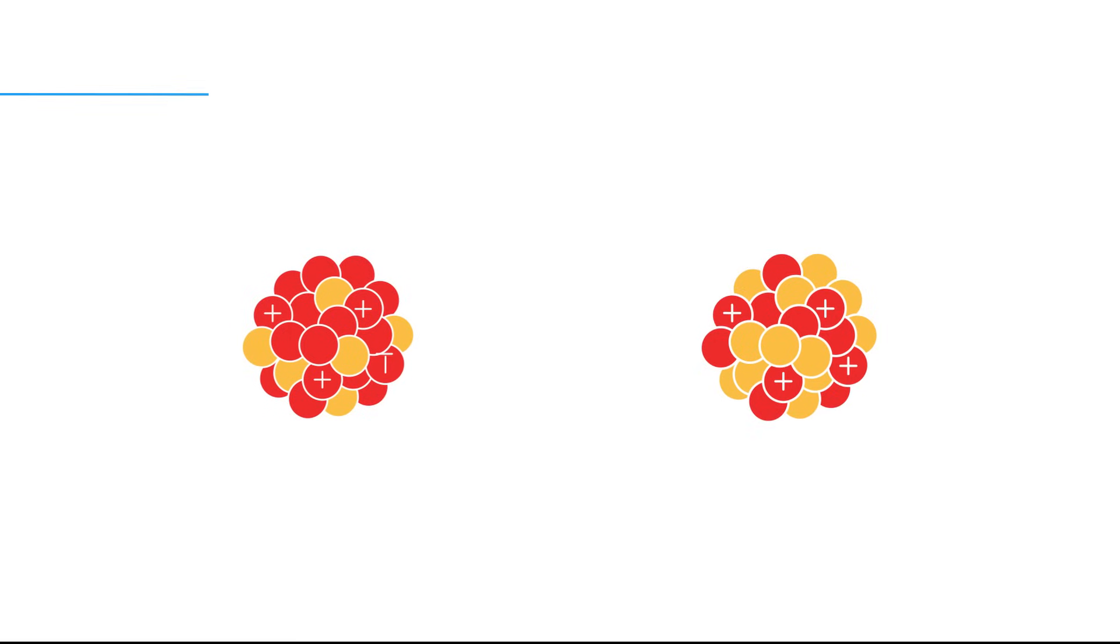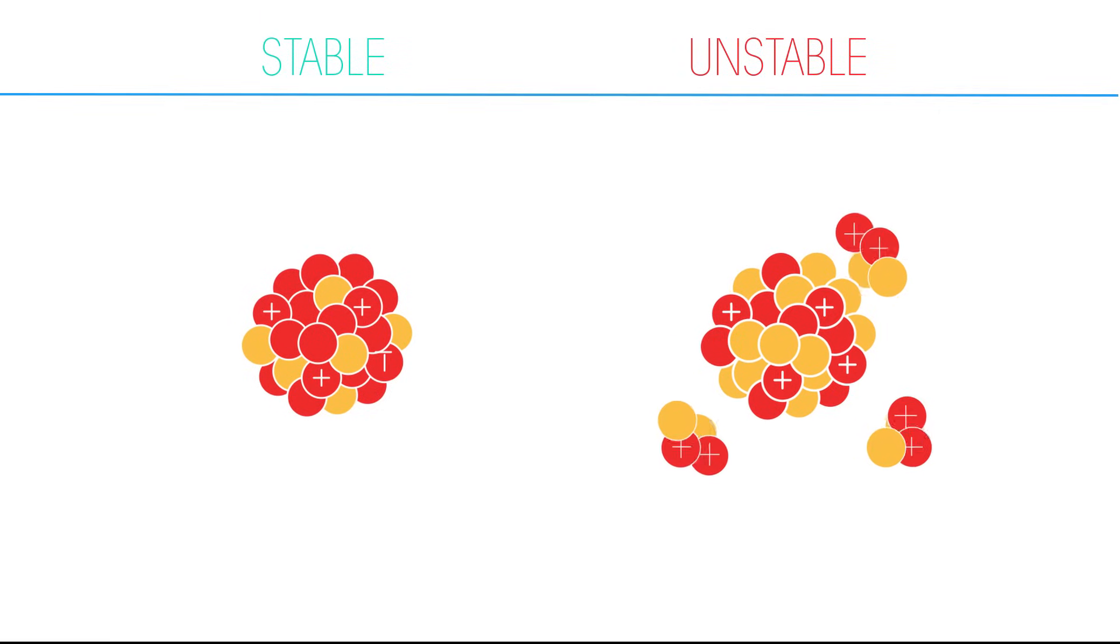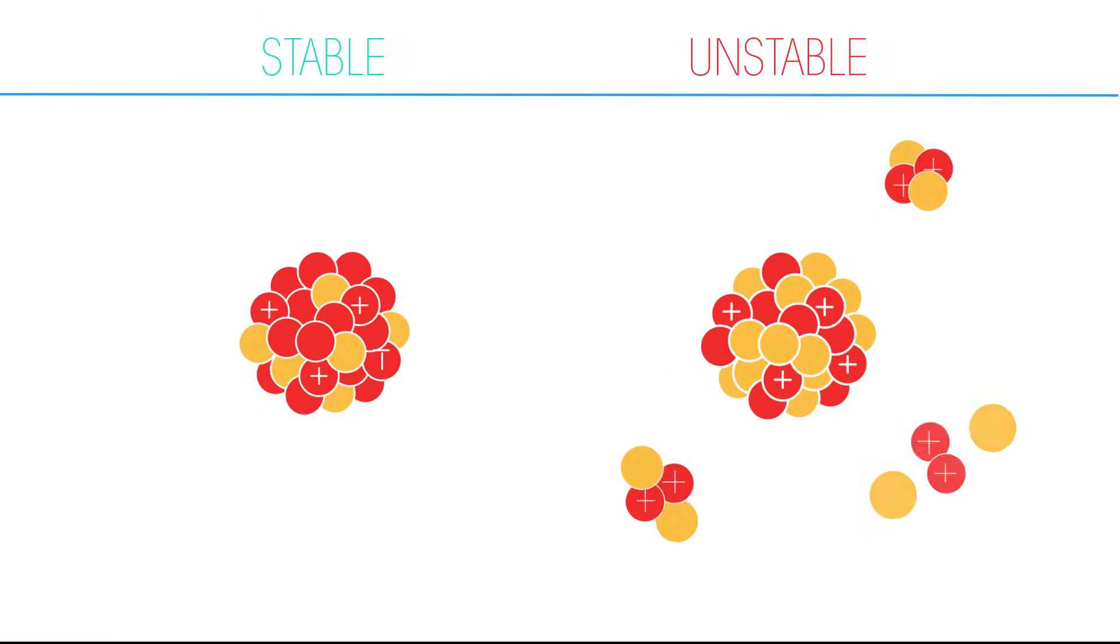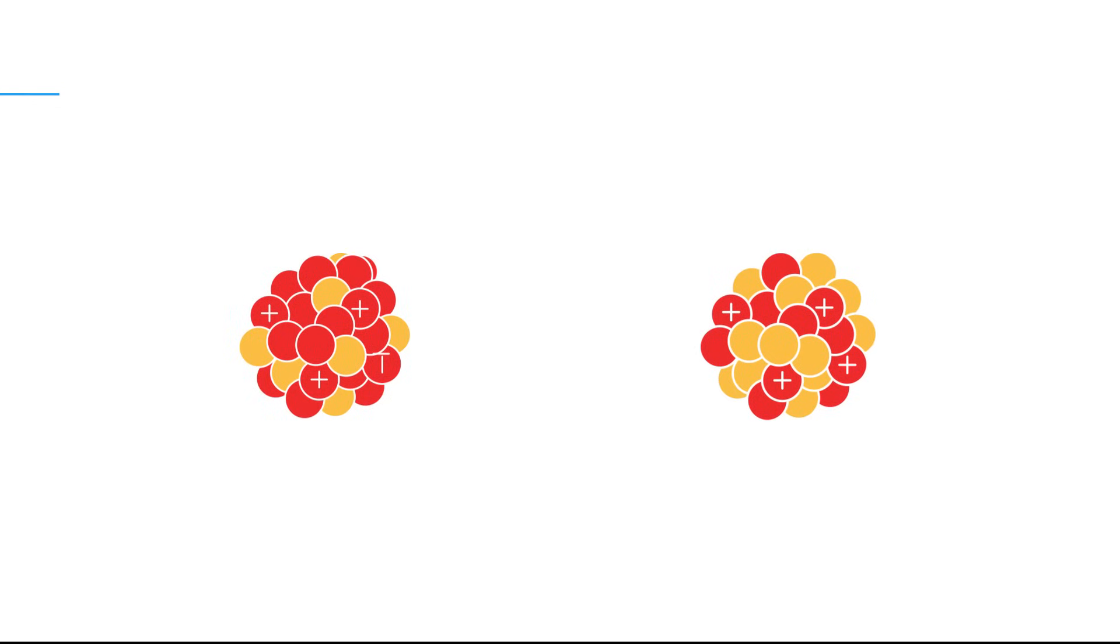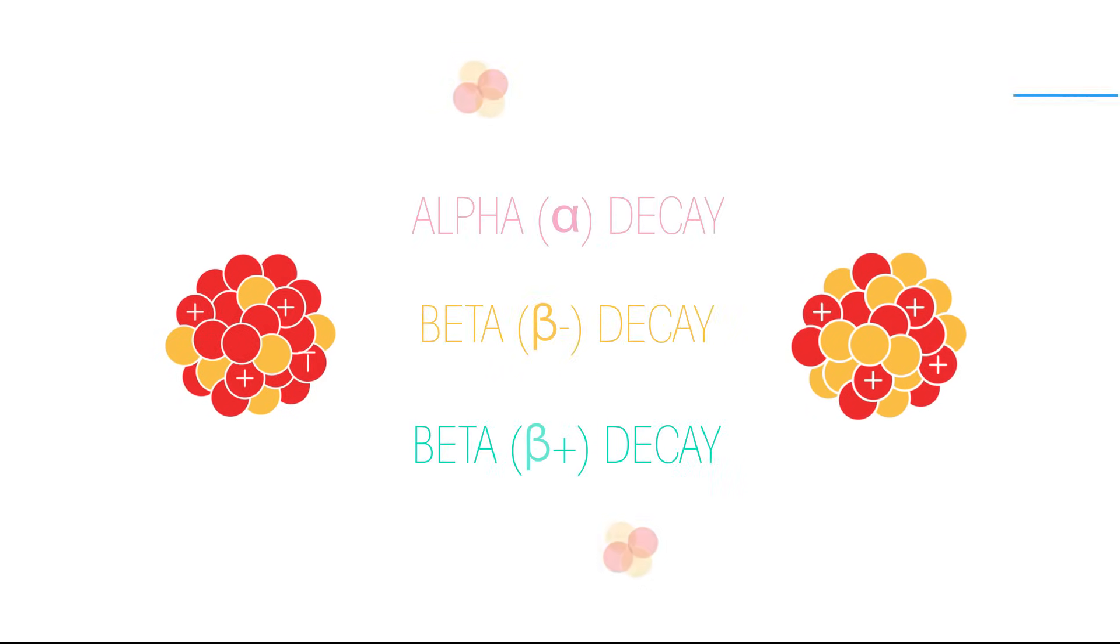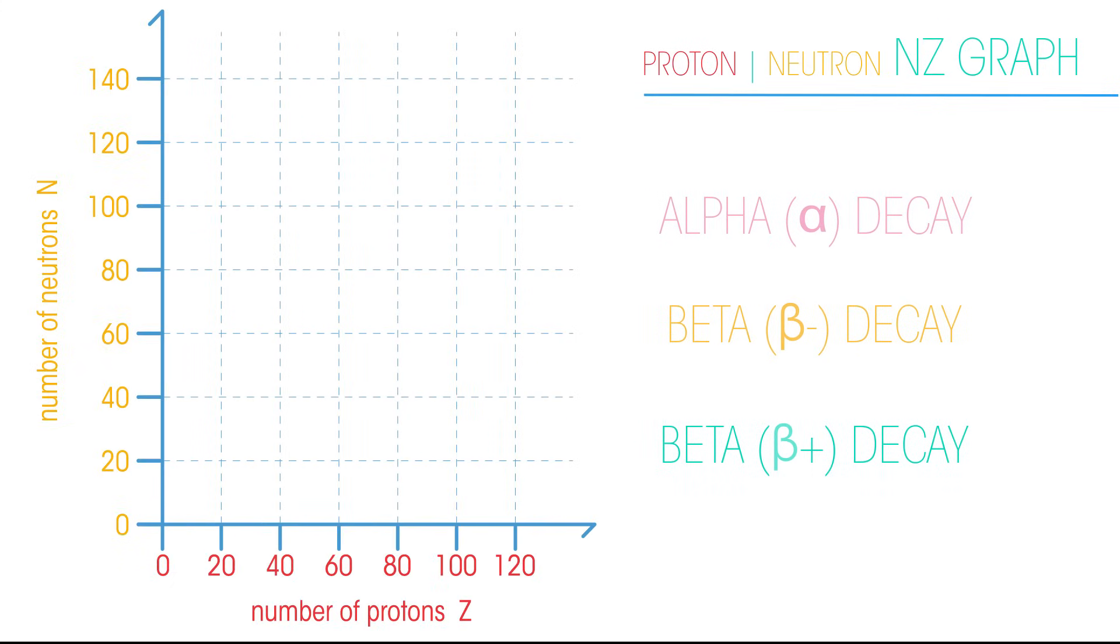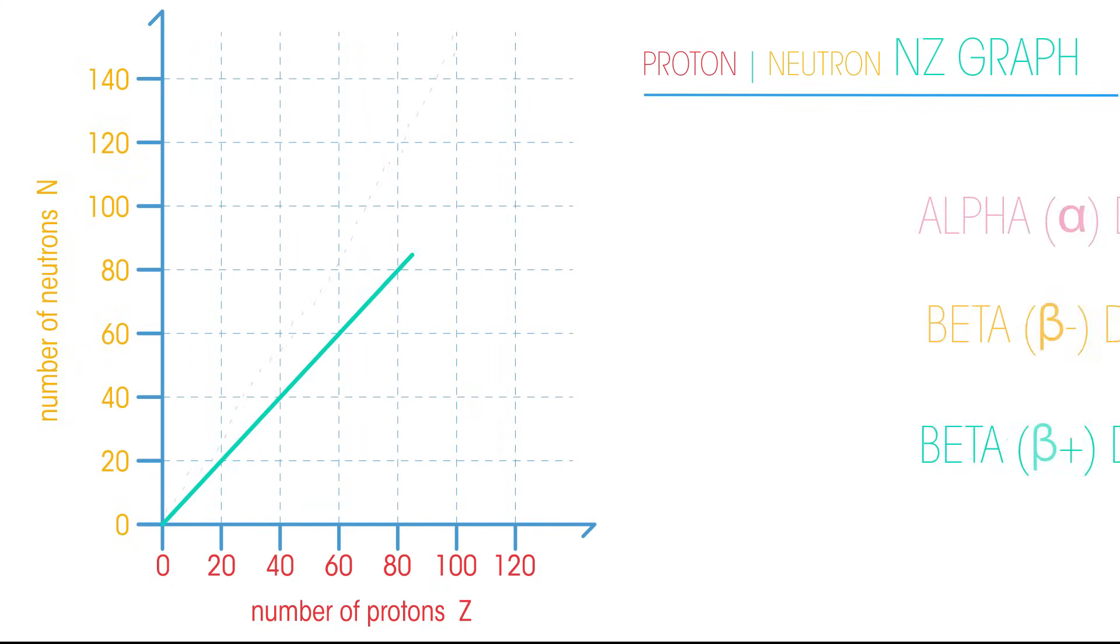So how do we know if an atom is stable or unstable? We can determine whether a radioisotope is likely to decay and what type of decay is likely to occur by looking at its position on a proton-neutron NZ graph.